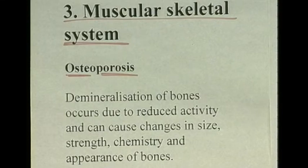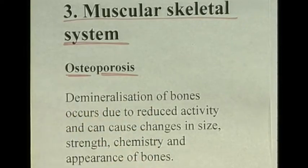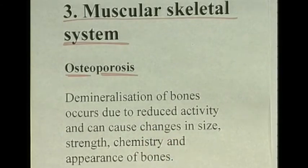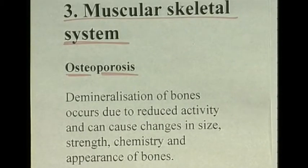Osteoporosis is demineralization of bones. The mineral content of bones — largely calcium — is lost from the bones, and this occurs due to reduced activity. Losing bone density causes changes in the size and strength of the bone and in its chemistry. The bones appear lighter because they are less dense.